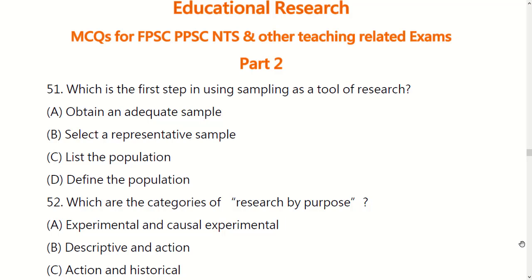Which is the first step in using sampling as a tool of research? You have four options. The right answer is D: define the population.